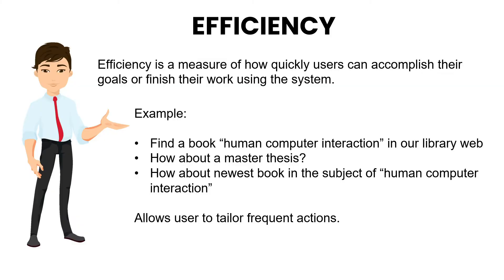Efficiency is a measure of how quickly users can accomplish their goals or finish their work using the system. For example, finding a book on Human-Computer Interaction in our library web, or finding a master thesis, or the newest book on the subject of human-computer interaction. Efficiency allows users to tailor frequent actions.